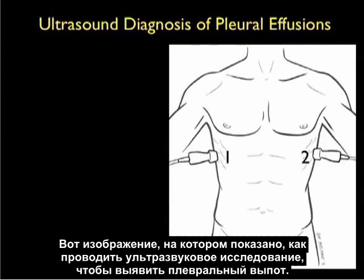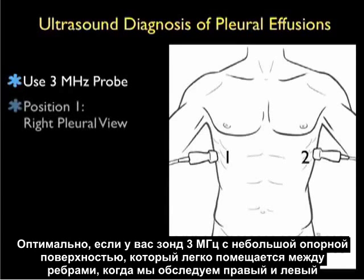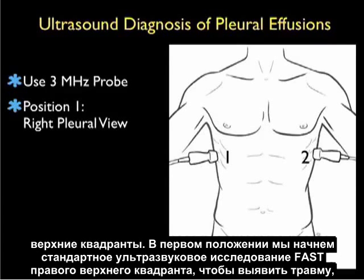Here's a slide reviewing how to perform the ultrasound examination for detection of pleural effusions. Optimally, you'll have a 3 megahertz probe with a small footprint that can easily sit between the ribs, as we'll be looking into the right upper quadrant and left upper quadrant areas.